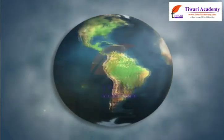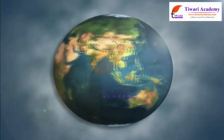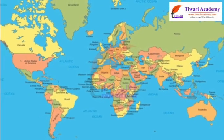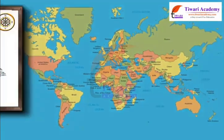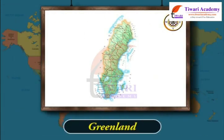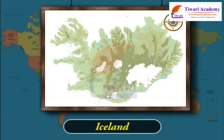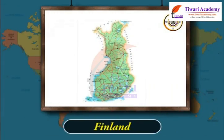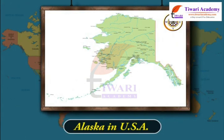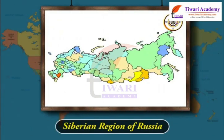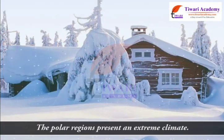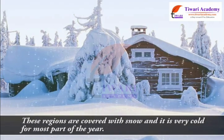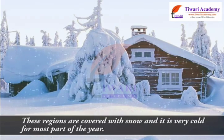The polar regions are situated near the poles, that is, the North Pole and the South Pole. Some well-known countries that have polar regions are Canada, Greenland, Iceland, Norway, Sweden, Finland, Alaska in the USA, and the Siberian region of Russia. The polar regions present an extreme climate. These regions are covered with snow and it is very cold for most part of the year.